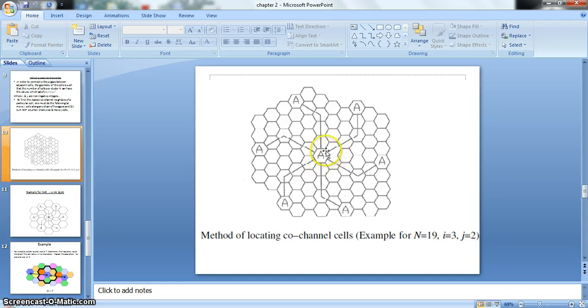Similarly, if I go in this chain of hexagons, i value is 3, so I move i cells first in this direction: 1, 2, and 3. Turn counter-clockwise, and then I move j cells: 1 and 2. I will find A. Similarly, if I go in this direction, I will find the co-channel cells. So you can move in any chain of hexagons, move i cells, turn counter-clockwise, and then move j cells. Then you will find the co-channel cells.